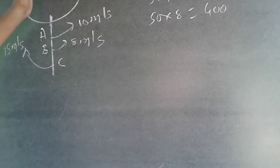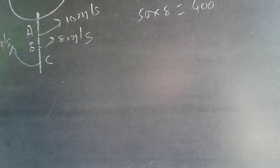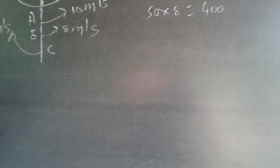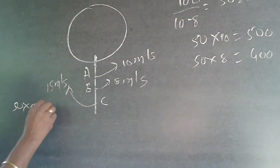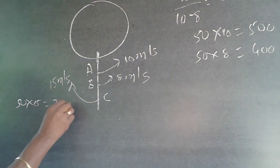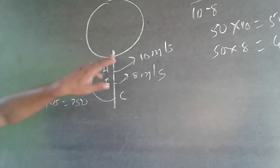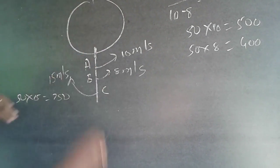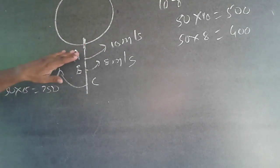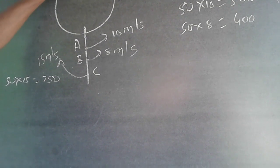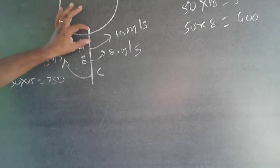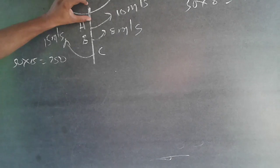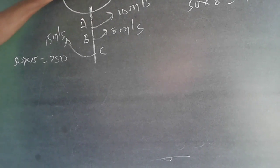Now we have to find out where C will be after 50 seconds. C runs 50 × 15 = 750 meters, which is seven rounds plus 50 meters extra. So when A and B are at the starting point, C has gone 50 meters beyond it and is not with them. When A and B meet for the first time at 50 seconds, C is not with them.